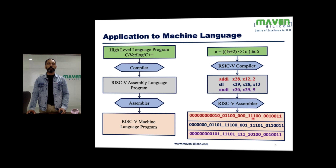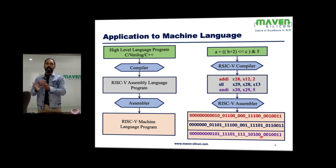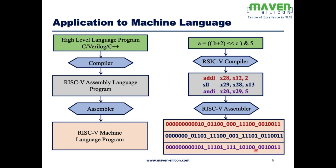So this is x12, this is x28, and this is the function which is ADD, and this is the immediate value — 12 bits. Overall, if you consider all fields together, it's 32 bits. This is defined by the RISC-V ISA, and this is how instructions are converted into binary. Finally, the binaries will be loaded into RAM, and then the processor is going to fetch the instructions one by one and execute everything in terms of binary.